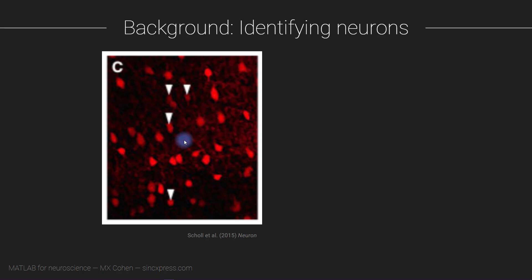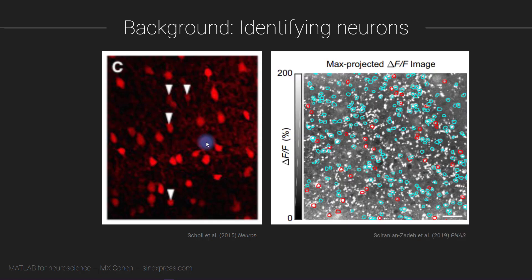If you have more neurons, like dozens or hundreds, maybe even thousands of neurons in the image data, then we need to switch to an automated method for identifying cell bodies. The second way of identifying neurons is through some algorithm that the computer is running.